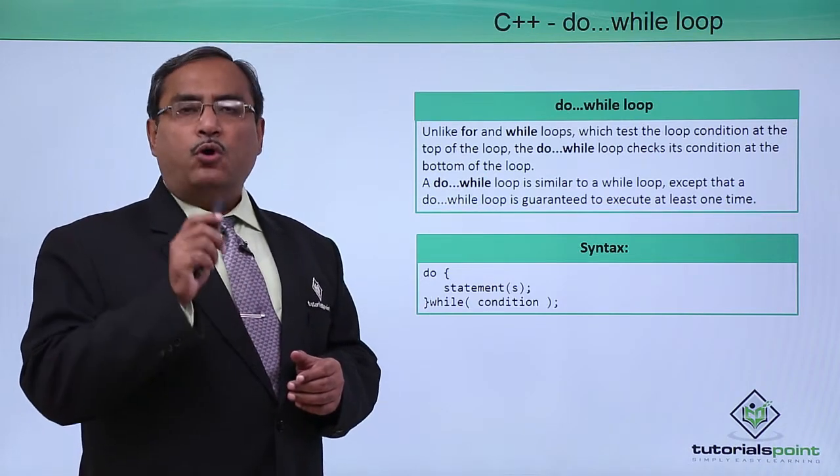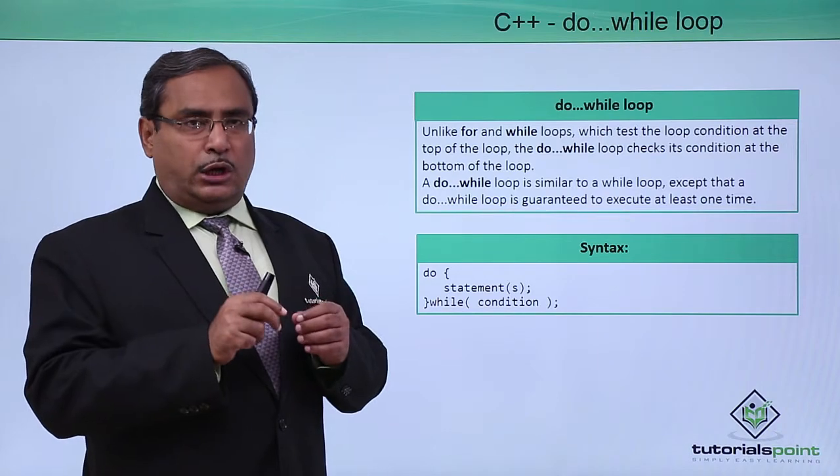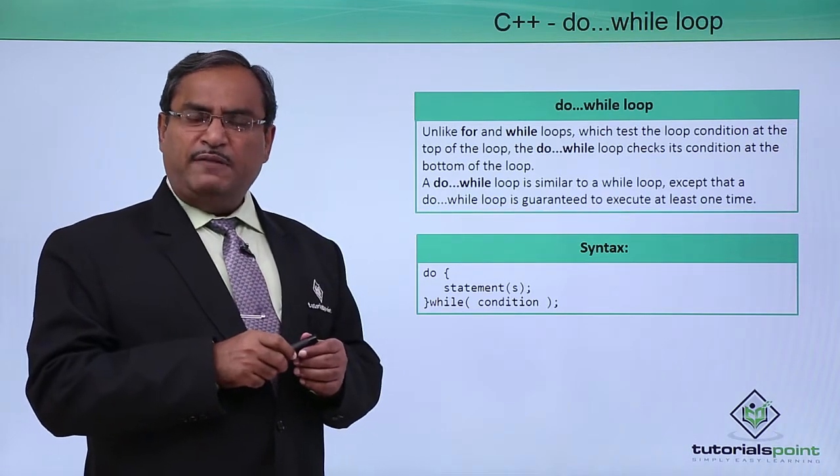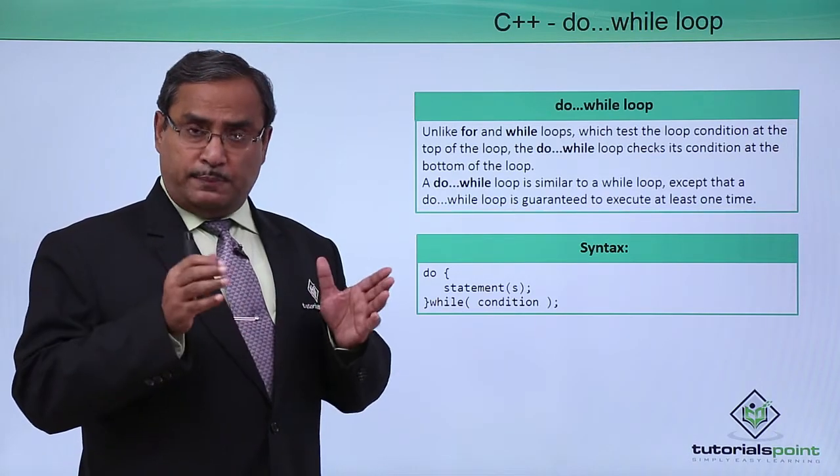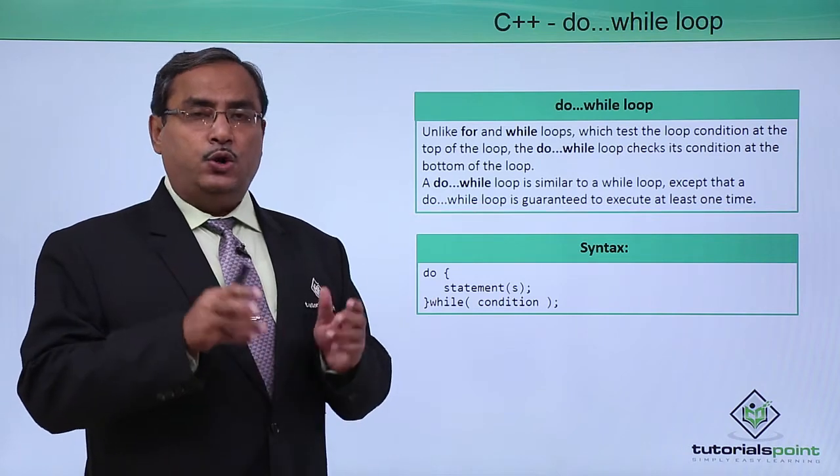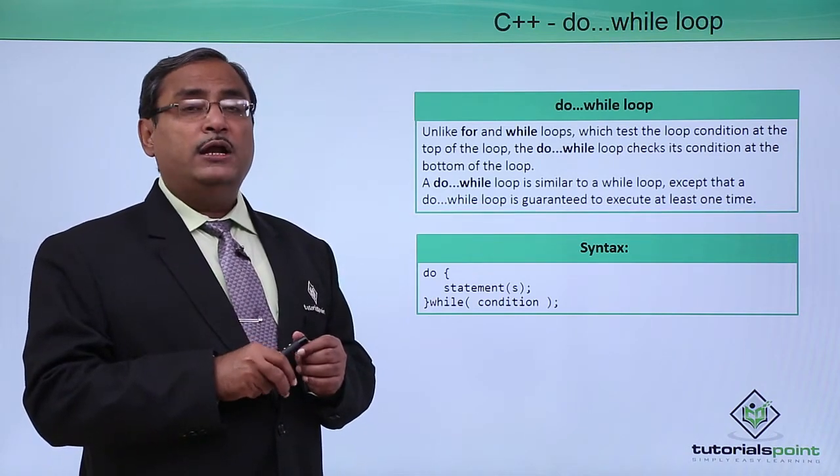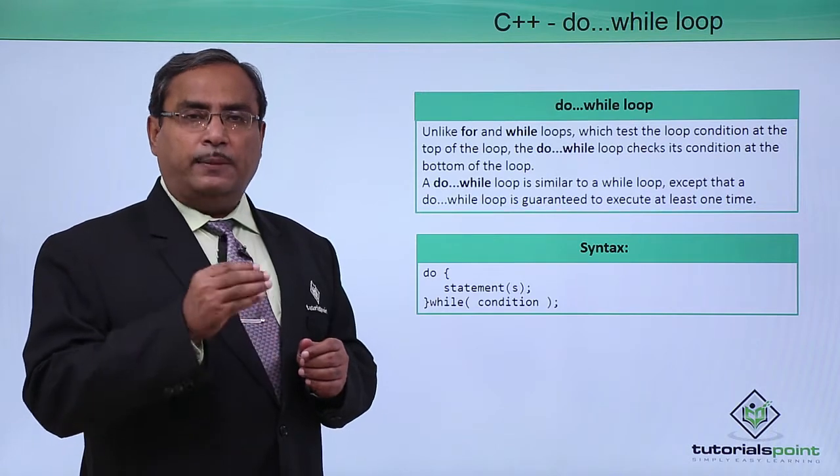In case of for, in case of while, we check the condition at the start. If the condition is false, then the body will not get executed, the loop body will not get executed. But in case of do-while, you are checking the condition at the bottom.